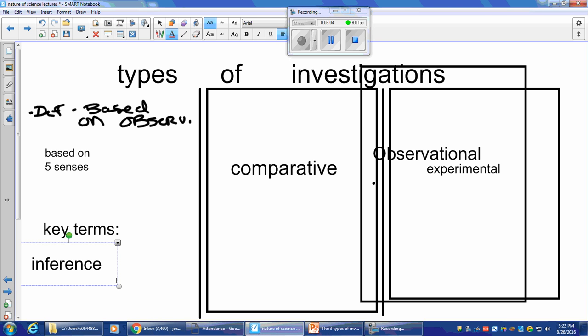Now, types of investigations. So key terms for investigations, five senses, inference. They can be quantitative in nature. What does that mean to be quantitative? Quantitative looks like the word quantity. So quantitative means quantity. So like a number, like a value. So what are some examples of things that we can find quantities of?